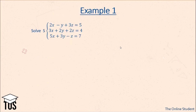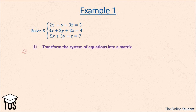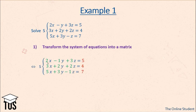Let's look at an example. We have this system of equations. The first step of the Gauss-Jordan method is to transform the system of equations into a matrix. We take all the coefficients of the x variable — 2, 3, 5 — and put them in the same column. We do the same for the y variable and the z variable, and the resulting constants go in the last column.